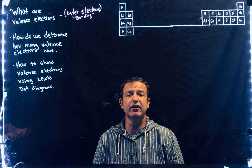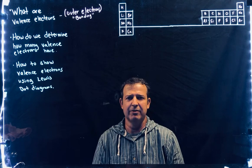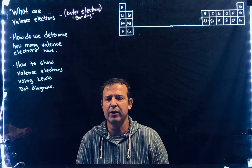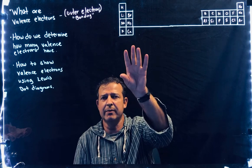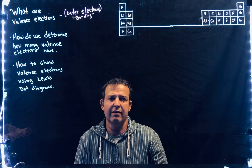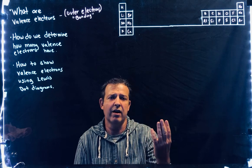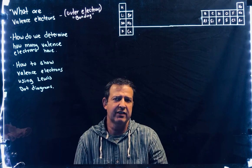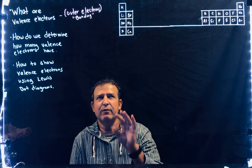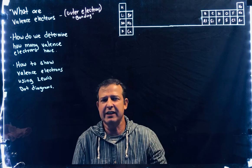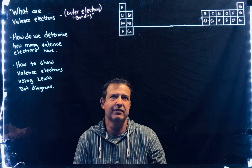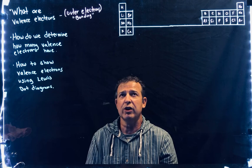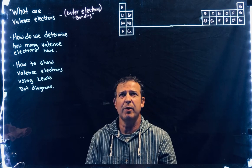Next we have to determine how many valence electrons an atom will have. To do that, we use the periodic table. I've drawn up the first 20 elements here. In this class, we'll tend to stay within these first 20 elements because we deal with life, and life tends to have basically four elements they interact with the most: carbon, oxygen, nitrogen, and hydrogen — about 90% of what makes up living things.